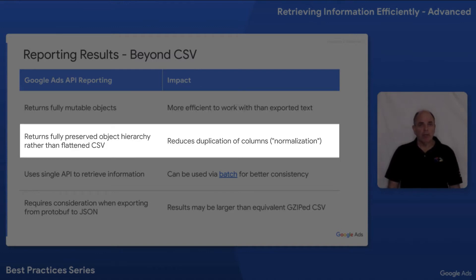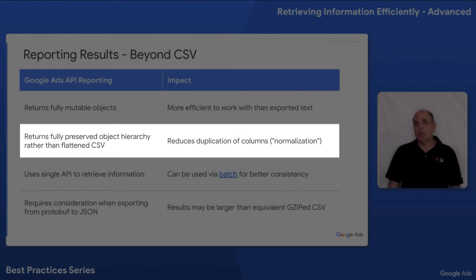If the output were to be flattened into a CSV format, it would lose the natural hierarchical relationship of the objects. It also may result in significant duplication of columns, which is technically called denormalization.